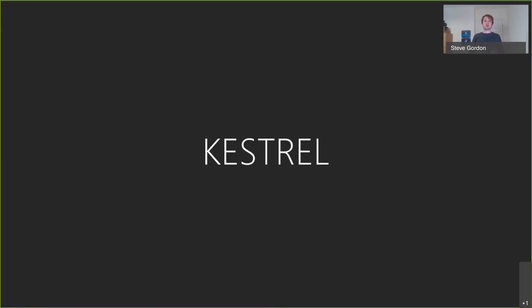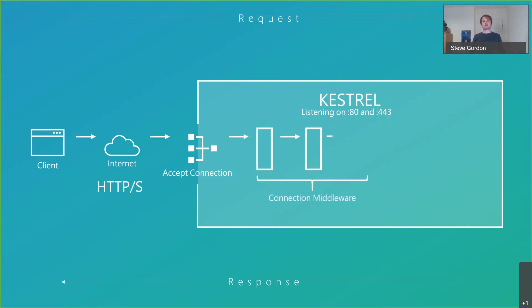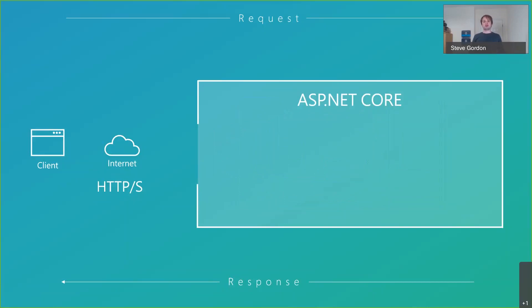ASP.NET Core applications are fundamentally just a console application that runs a host. The host is the process that keeps the application alive, listening for shutdown signals from the operating system. Within the host, a web server can be started - Kestrel conforms to the IServer interface and binds itself to whatever ports it's been configured for. The client's request flows over the internet or internal network to Kestrel, which handles requests and connections through a series of connection middleware.